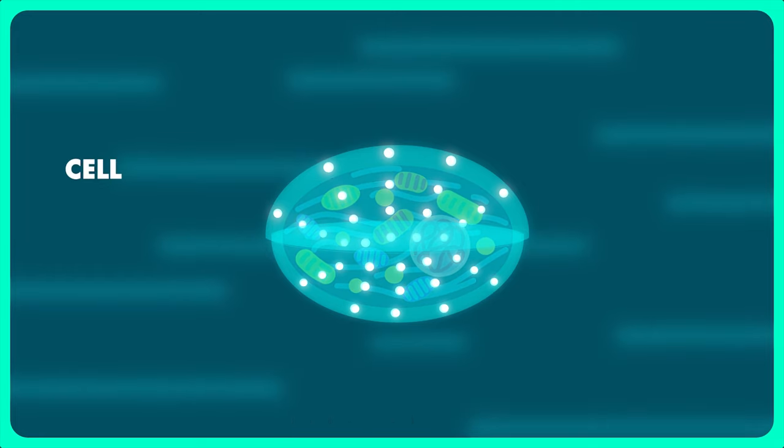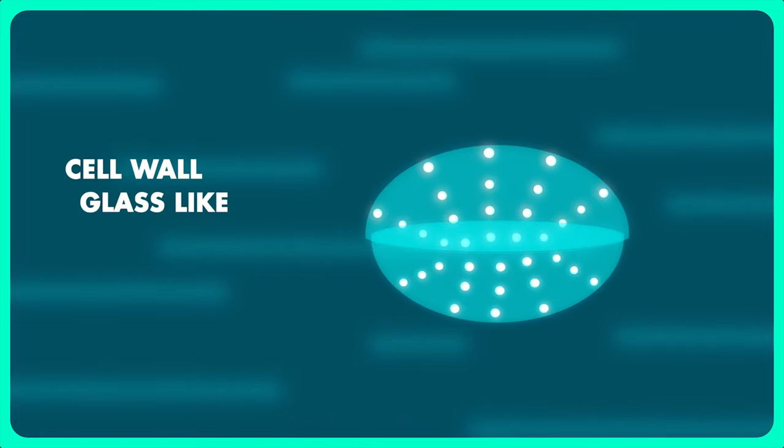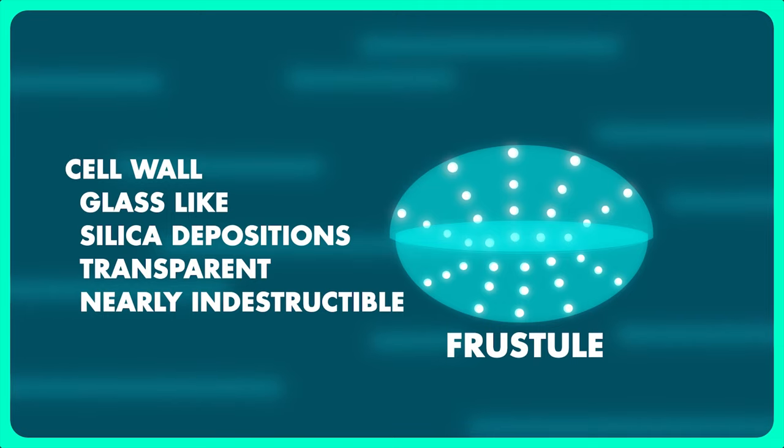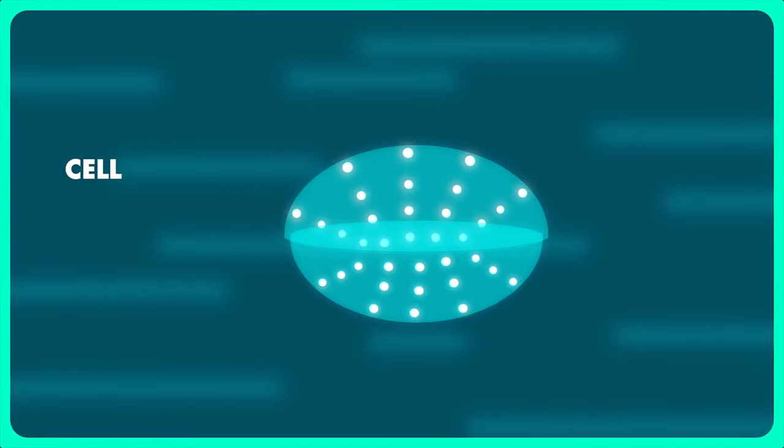The glass-like appearance of their body is because the cell wall of diatoms contain depositions of silica. So their body is covered in a transparent and nearly indestructible shell made up of silica called the frustule.